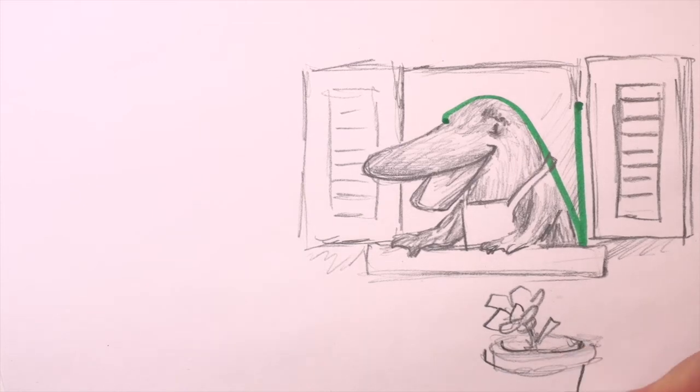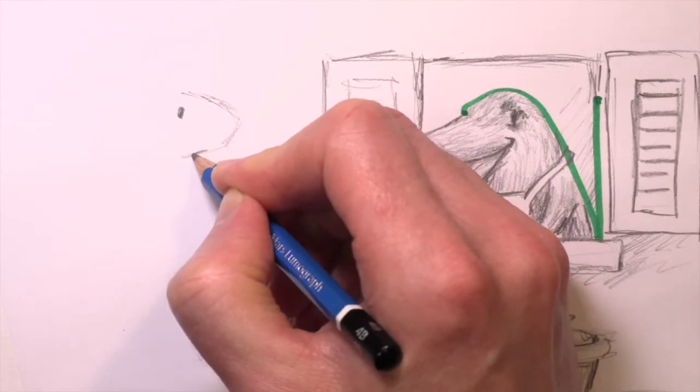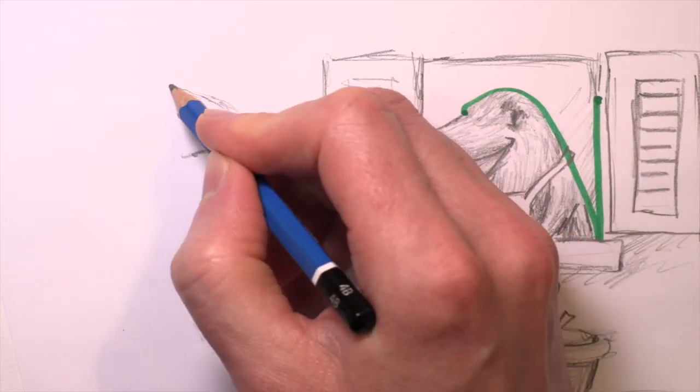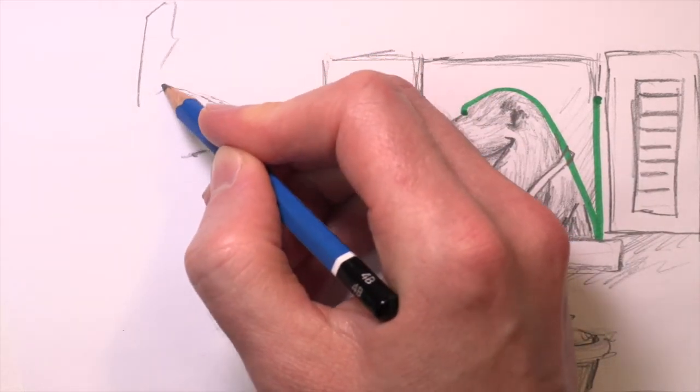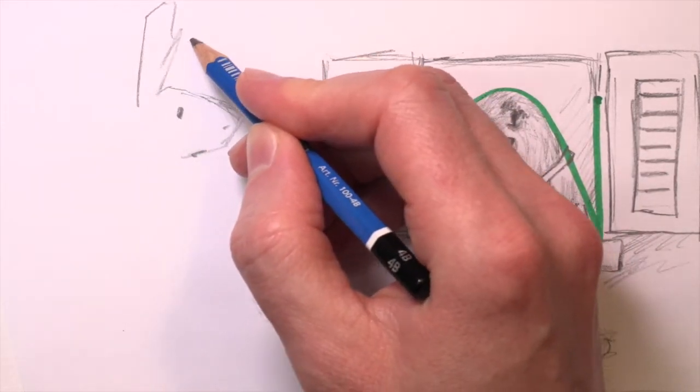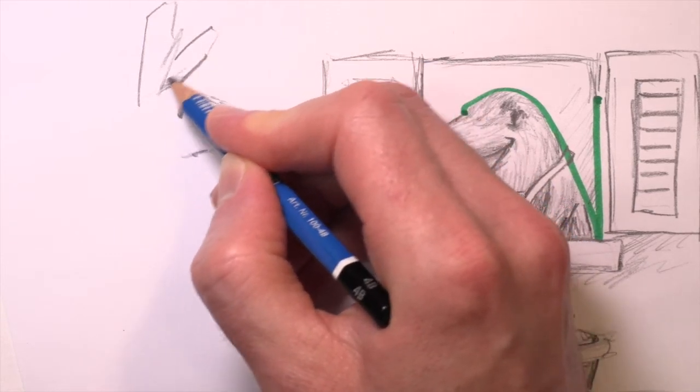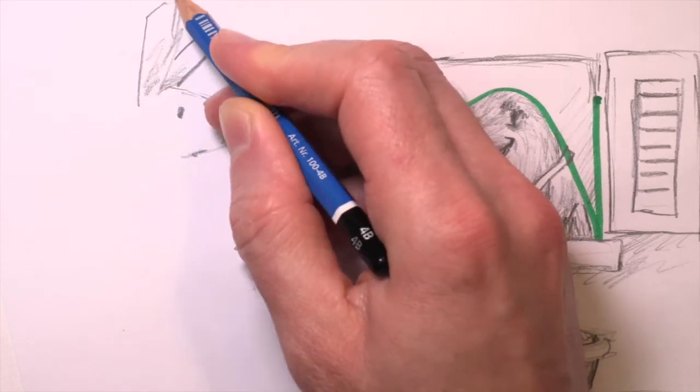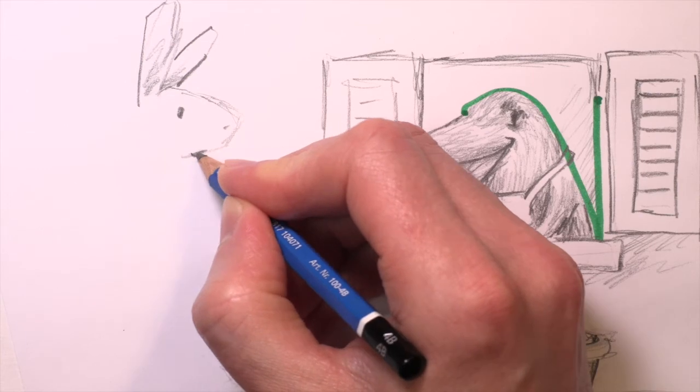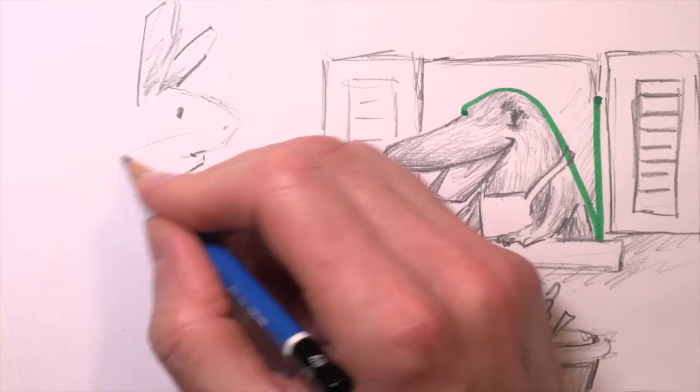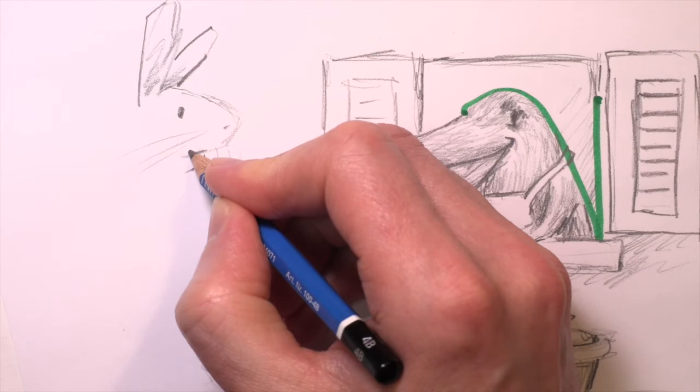We'll give him a flower pot. Maybe Patrick is talking to somebody through the window. I'll draw a hare over here. I'll say the hare's name is Gertrude. Patrick's friend Gertrude.